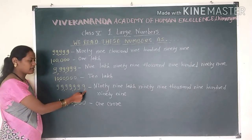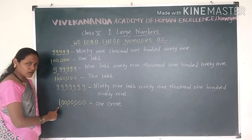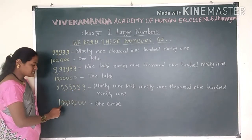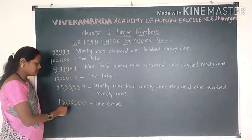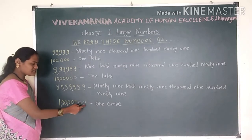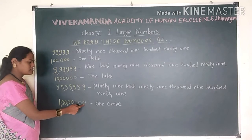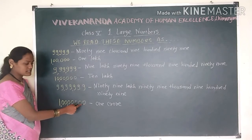1 followed by 7 zeros: so 1 add to get 10, 100, 1000, and so on up to 1 crore.